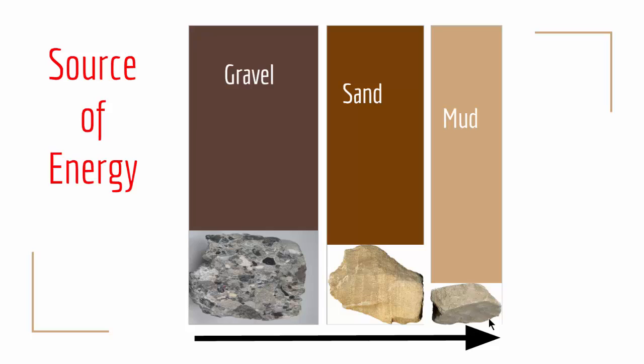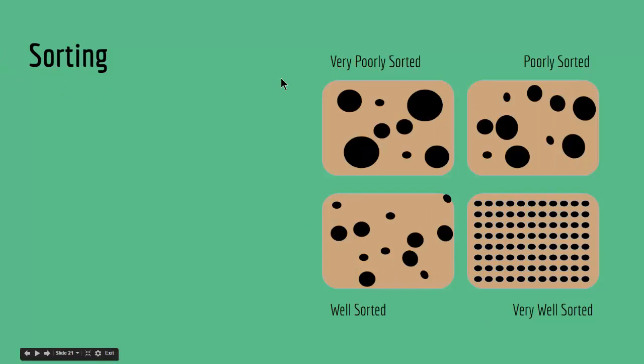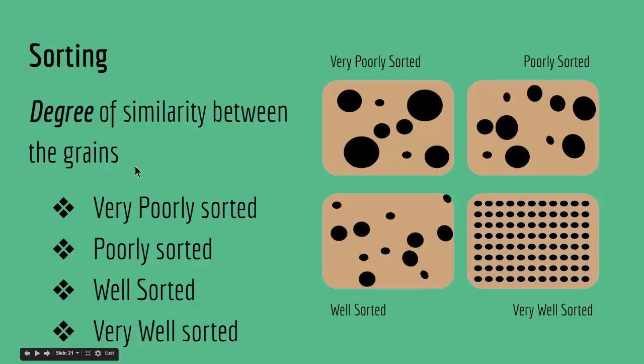Another tool that can tell us about depositional environments and grain history is sorting. We have four kinds of sorting: very poorly sorted, poorly sorted, well sorted, and very well sorted. So what is sorting? Sorting is the degree of similarity between the grains. If you have a clastic rock and the degree of similarity between the grains is very low, we call it very poorly sorted — meaning you have big grains, medium grains, large grains, and small grains all mixed together. This is a poorly sorted clastic rock.